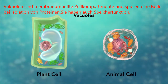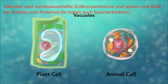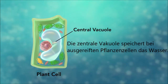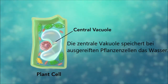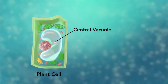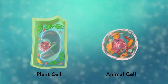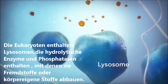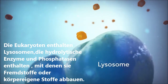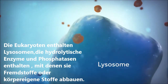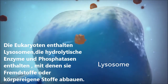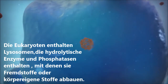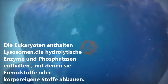Vacuoles are sac-like structures that store different materials. Here, in this plant cell, the central vacuole stores water. Going back to the animal cell, you will see an organelle called a lysosome. Lysosomes are the garbage collectors that take in damaged or worn-out cell parts. They are filled with enzymes that break down this cellular debris.